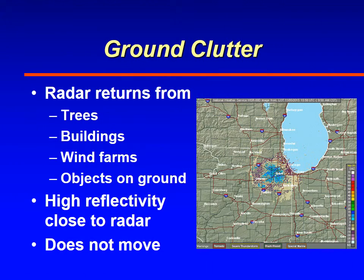Ground clutter is also a problem — this is where the radar beam bounces off the surface of the earth and produces a return. It typically happens close to the radar and may produce high radar reflectivities. You can tell you have ground clutter by checking satellite imagery to confirm there are no clouds, and by noting that ground clutter doesn't move from radar scan to radar scan.